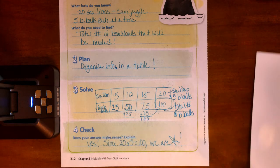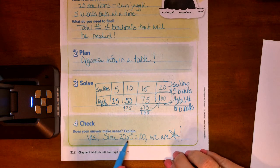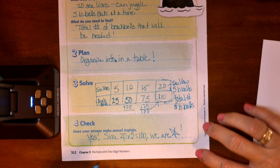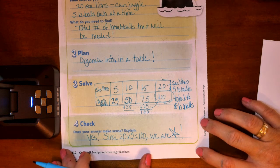So let's check our work. We're correct since we know that 20 times 5 equals 100. There you go.